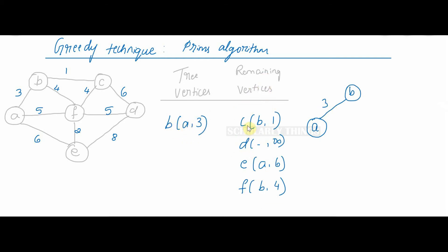The remaining vertices are these. Among these which is the smallest edge. So from B I go to F, weight is 4. Tree vertex is F B of A, 4. The remaining vertices are these.